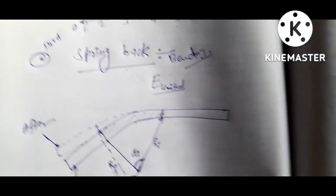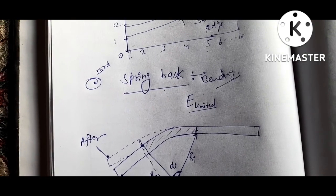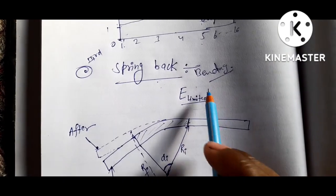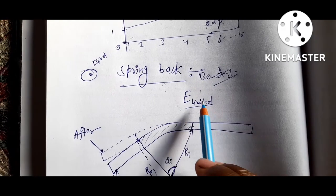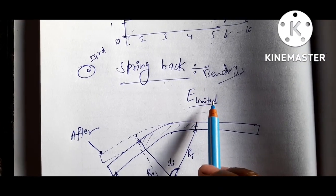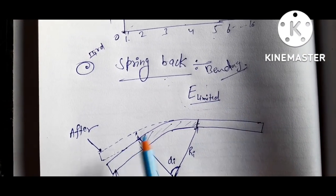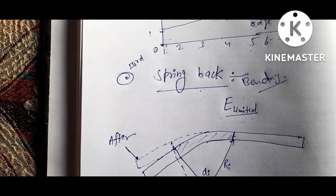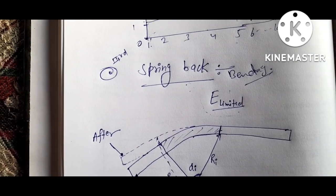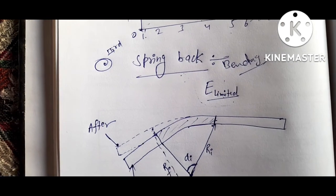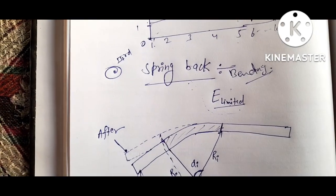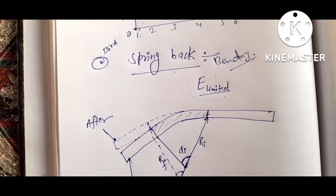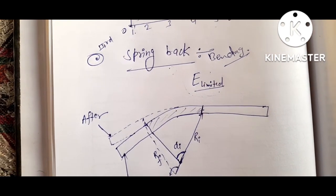Friends, you know all materials have a finite modulus of elasticity. So in this case, a plastic deformation is always followed by elastic recovery upon removal of load. In bending, this recovery is known as spring back.